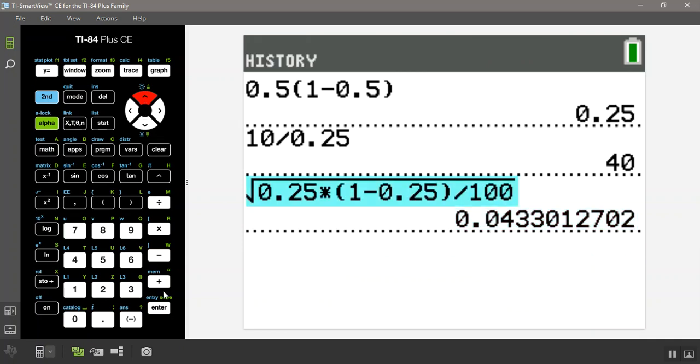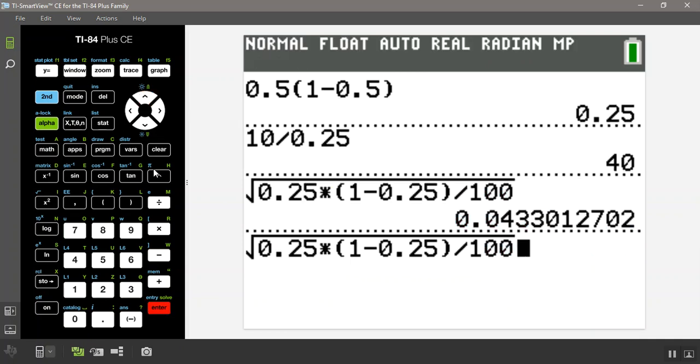And we get 0.0433. For the next part, it's going to be the same function, so I'm going to go grab it. But I'm going to go in here with the arrow, so I'm going to move left, my left arrow key, and type another 0 in there, and then move right. So you can see that 1,000 is underneath the square root, the whole thing. All three 0s are under that square root. And I press Enter, and I get 0.0137.